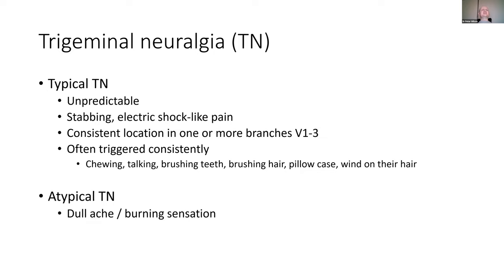Trigeminal neuralgia is cranial pain rather than headache. Typical trigeminal neuralgia is very unpredictable in its occurrences. It can be an electric shock-like pain, consistently in the location of one or more branches of the trigeminal nerve, often with a particular trigger such as chewing, brushing teeth, or even wind on your hair. It's also known as the suicide disease because the pain is so bad that people choose to take their own life. It needs to be differentiated from atypical trigeminal neuralgia where the pain is more consistent with more of a burning sensation.